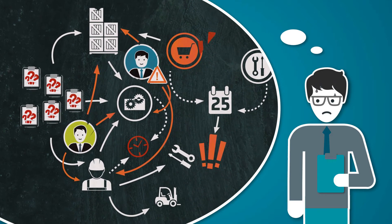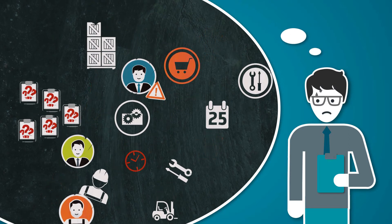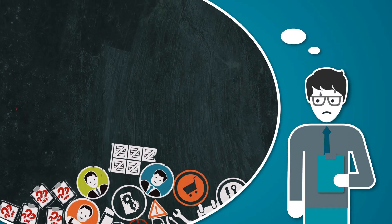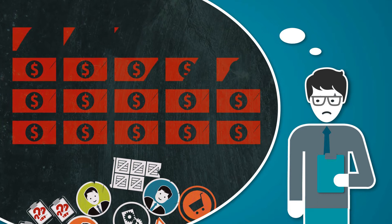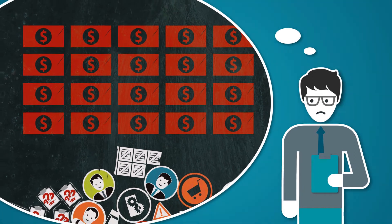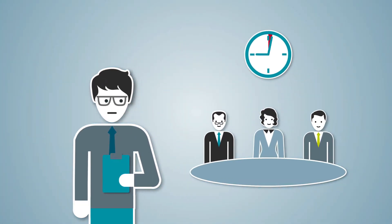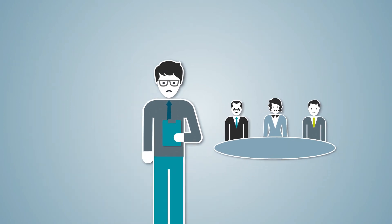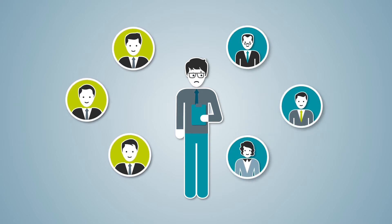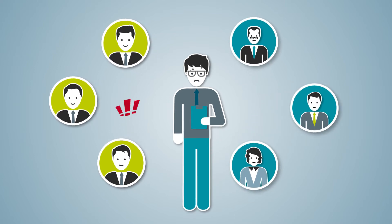Unexpected downtime also threatens on-time deliveries. This often results in penalty payments because of delayed deliveries. These insecurities in planning result in long meetings to discuss and coordinate the work processes. At the same time, the customers, his colleagues, and you demand precise and reliable predictions.